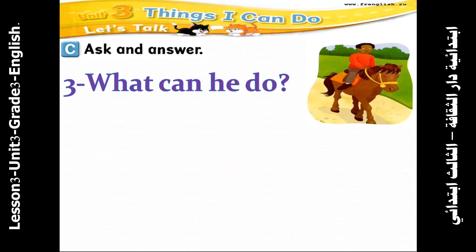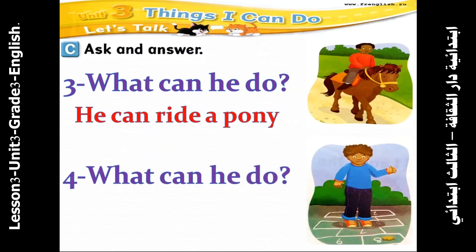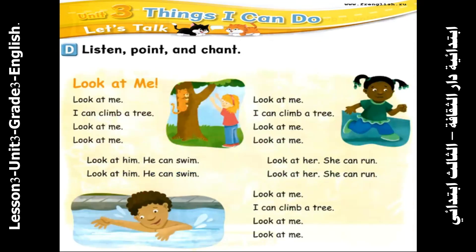Number three: What can he do? He can ride a pony. Number four: What can he do? He can play hopscotch.